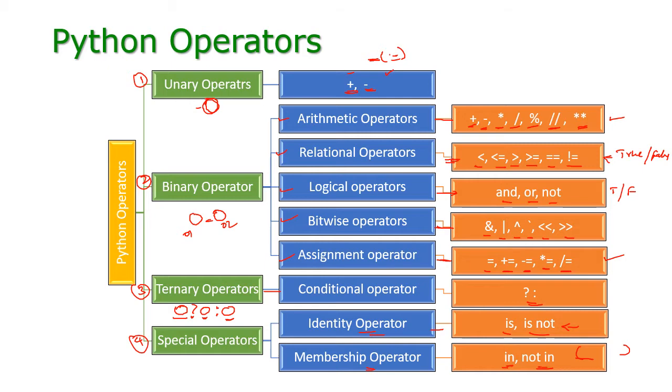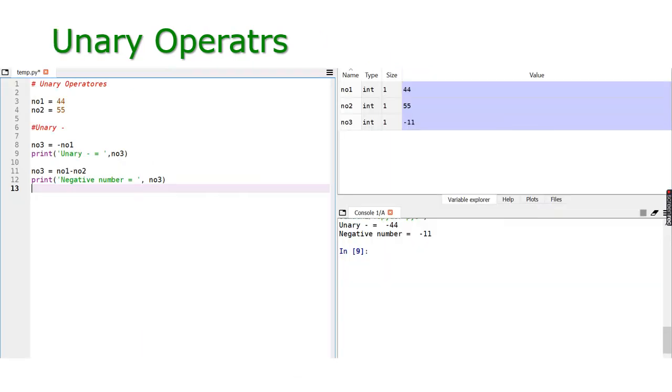For membership operator, in a group of values we test whether a given value is available or not — for that purpose we are having 'in' and 'not in'. Let us see all these things with examples in the forthcoming slides. First, let us see the unary operator.